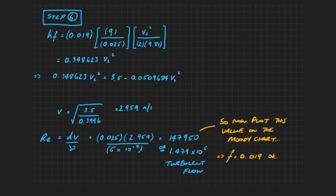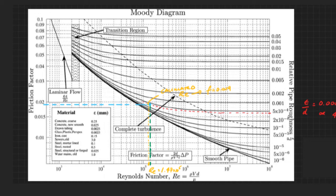Let's now plot that on the Moody chart. We can see now that we've plotted that new value of the Reynolds number, we can see that the friction factor of 0.019 is okay.